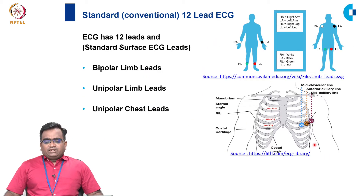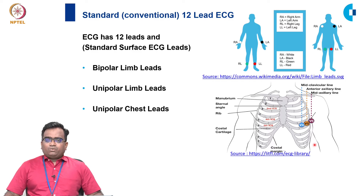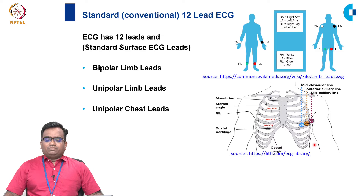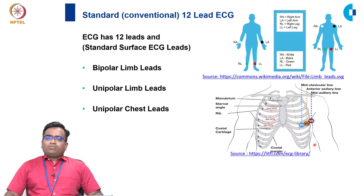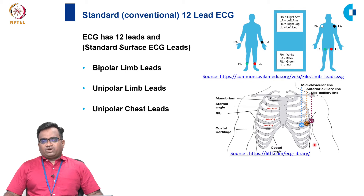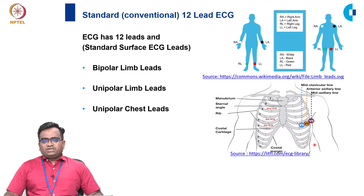The standard lead system is called the 12-lead system. It is classified into two categories: limb leads, which are placed over the limbs, and chest leads, which are placed over the precordial surface on the chest area. Limb leads are further classified into bipolar limb leads and unipolar limb leads. Unipolar chest leads are placed over the precordial surface.